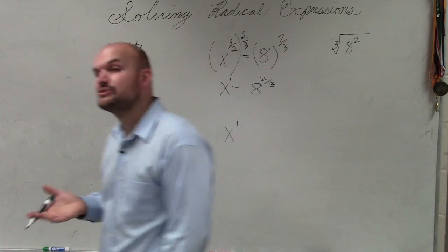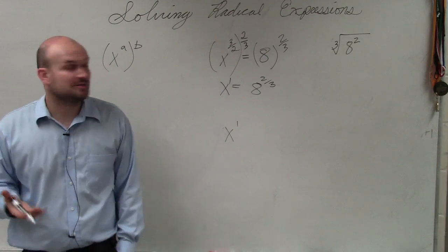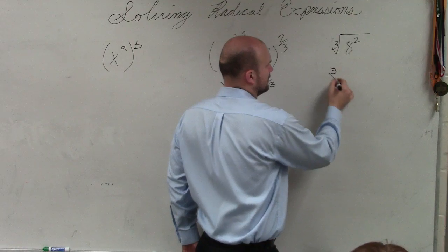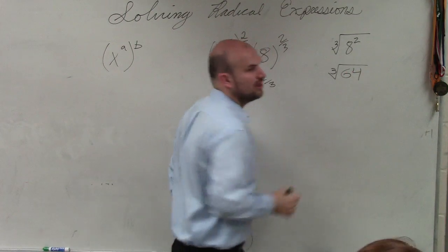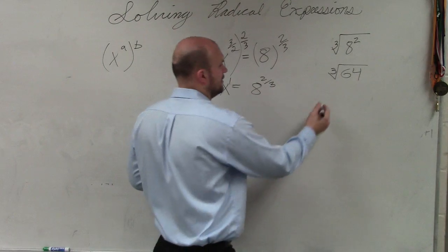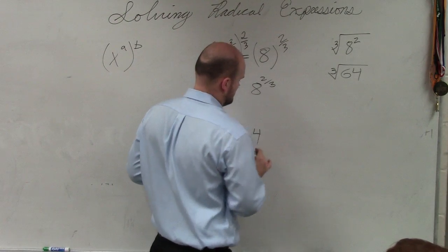All right? Now sometimes you guys are going to have some difficult numbers, but if you have a calculator, you can easily go ahead and compute these. 8 squared is 64. Cube root of 64, what number multiplied by itself 3 times gives you 64? Anybody know? 4.